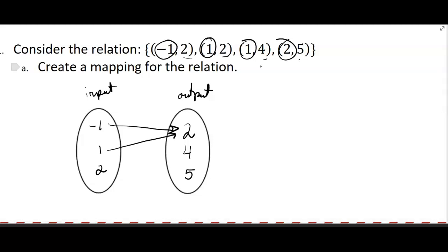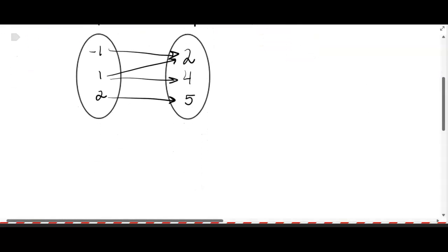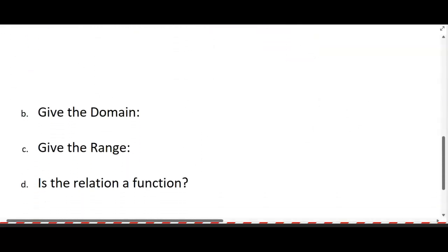One maps to two—that's the next ordered pair. And then one's mapping to four, and then two is mapping to five. If people did this problem, they usually got this right. That's the mapping.